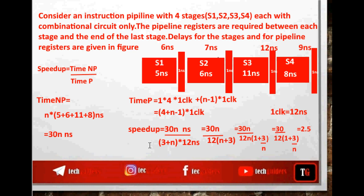We know that the maximum speedup achievable equals the number of stages when n tends to infinity. However, here even when the number of instructions is very large, the speedup is only 2.5. This is because different stages have different delays, we are using intermediate buffers, and the clock period is set to the longest stage delay. All these factors reduce the speedup, making it much less than the number of stages.